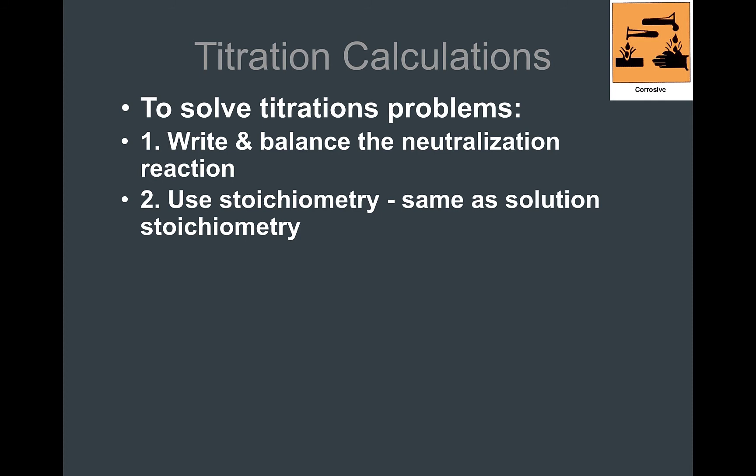When you solve a titration problem, you're going to write and balance the reaction first. This is a stoichiometry problem — one of the most important things is to have a balanced equation to start, because that shows you the relationship between the substances. When you carry out a titration, it is a chemical reaction, so we're always going to start with a balanced equation. Then you'll use solution stoichiometry to figure out your missing information.